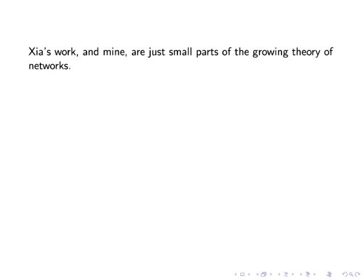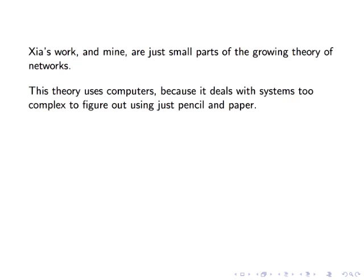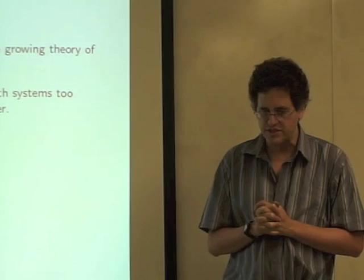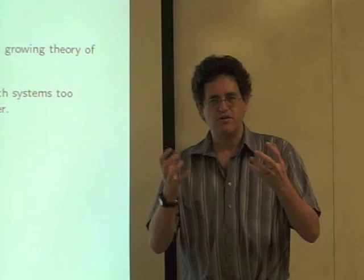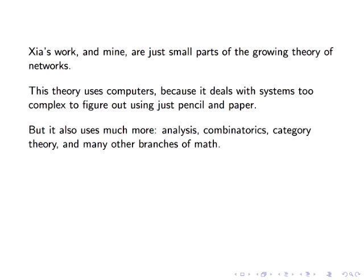For one thing, it's very important in his work to use computers to simulate the leaves to see whether his model is on the right track. He's dealing with systems that are too complicated to figure out using just pencil and paper calculations. So I claim that all of this new mathematics for eco-technology is going to require computer calculations. But on the other hand, it's not just a bunch of computer calculations. It uses all the tools of math that we have at our disposal: analysis, combinatorics, in my case category theory, and lots of other branches of mathematics. So don't get the wrong impression that it's just all going to be computers. That's certainly not true.